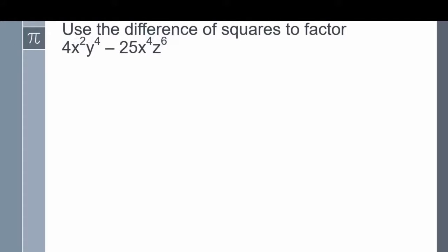Example number 2: use the difference of squares to factor 4x squared y to the power of 4 minus 25x to the power of 4 z to the power of 6. 4x squared y to the power of 4 can be written as 2xy squared raised to the power of 2, and 25x to the power of 4 z to the power of 6 can be written as 5x squared z cubed raised to the power of 2. We can check our work: 2xy squared times 2xy squared gives 4x squared y to the power of 4, and 5x squared z cubed times 5x squared z cubed gives 25x to the power of 4 z to the power of 6. Both quantities are perfect squares, so this is the difference of squares.